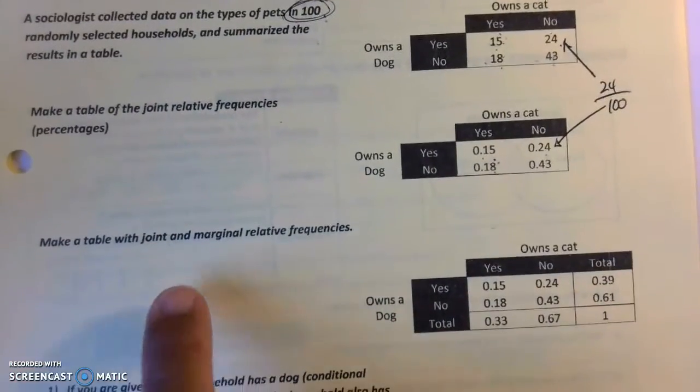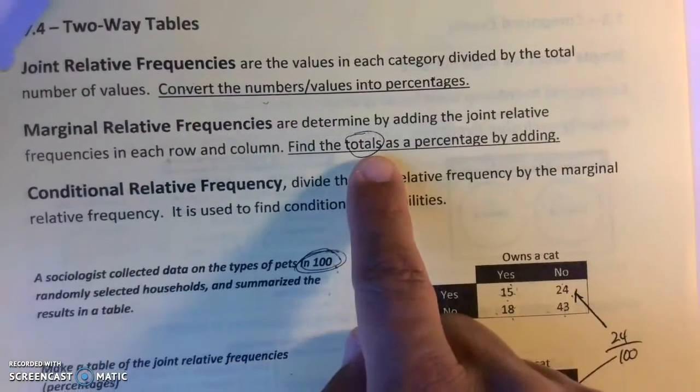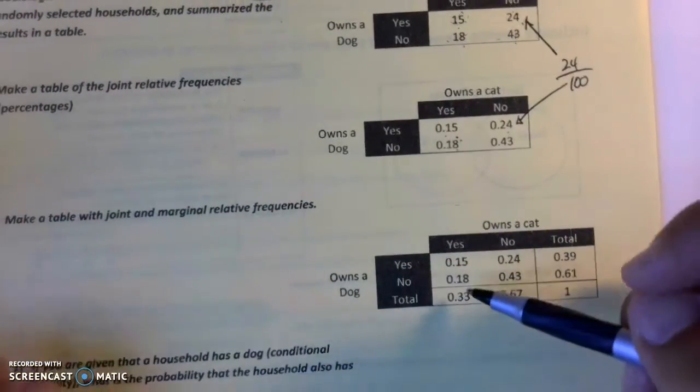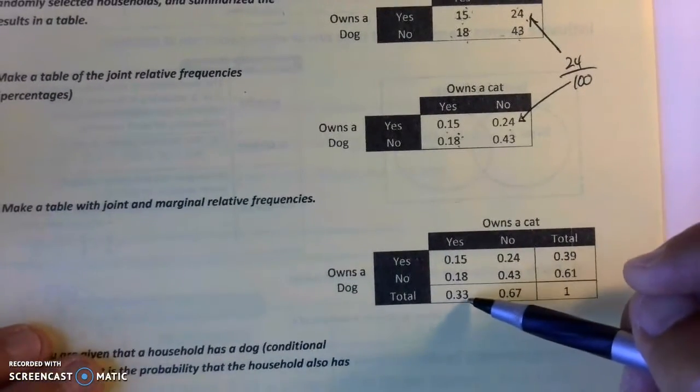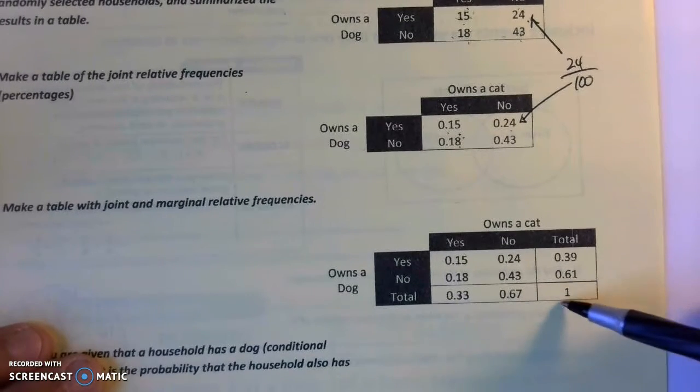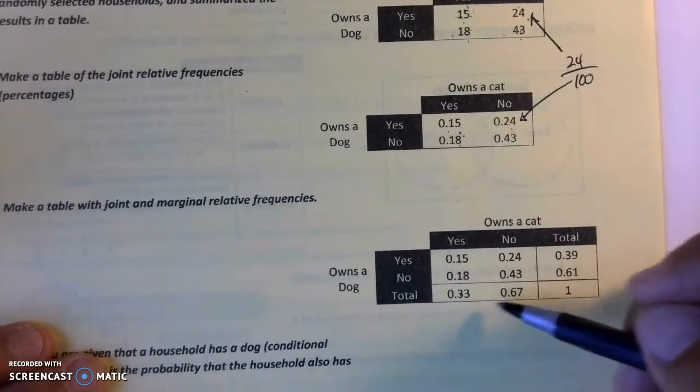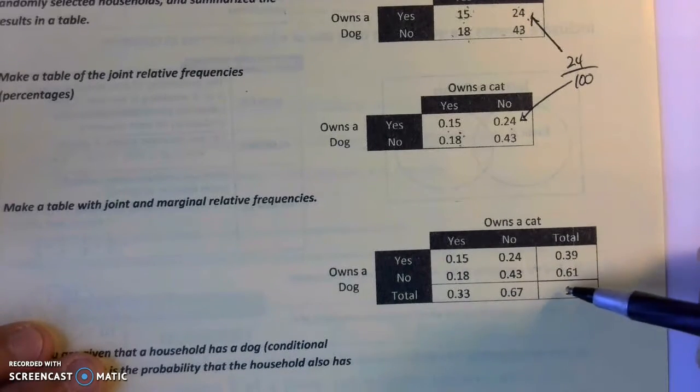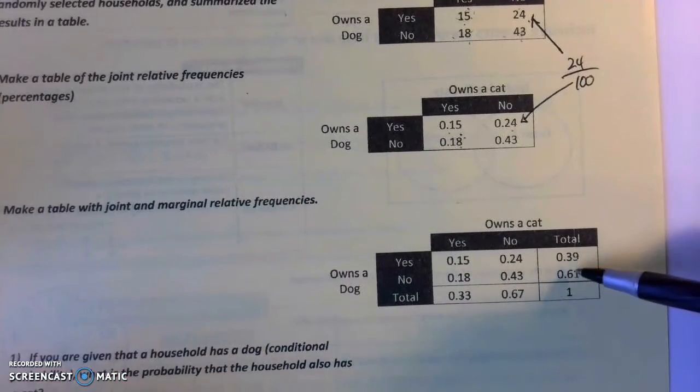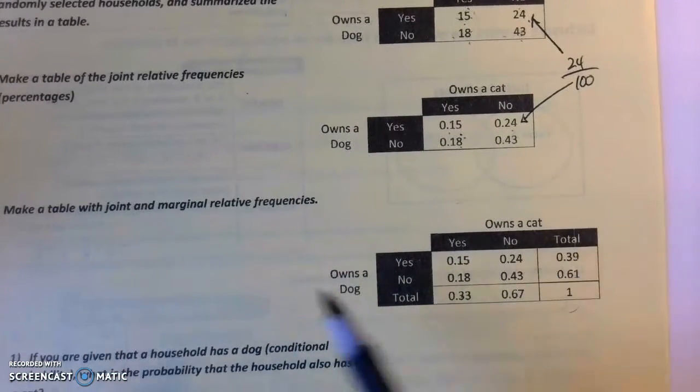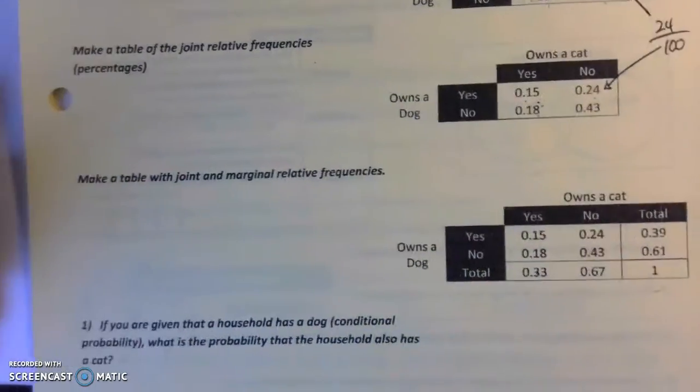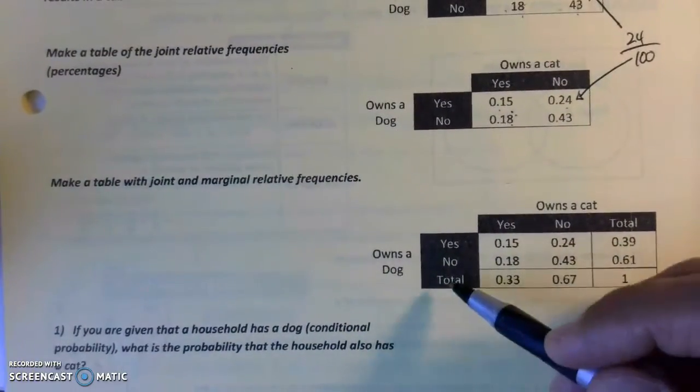Next, they'll ask you to make a marginal relative frequency, which means totaling up the percentages. You have yeses and nos. If you add 33% yeses on cats and 67% nos, it should add up to 100%. Sometimes it might round and not hit exactly 100%, showing 99-point-something. That's called marginal relative frequency—you take the converted percentages, add them up, and get your totals.